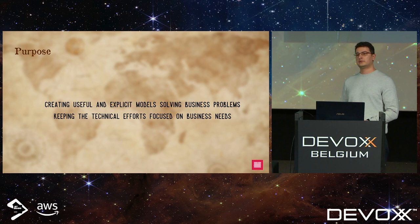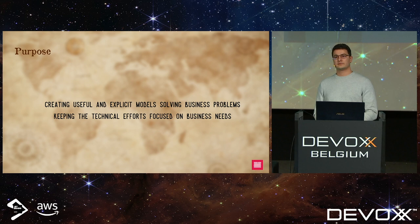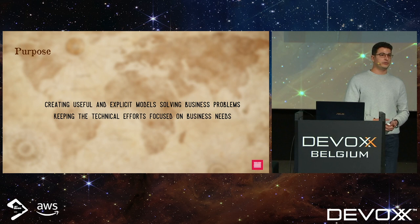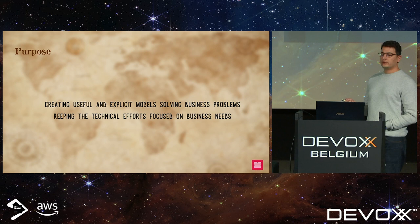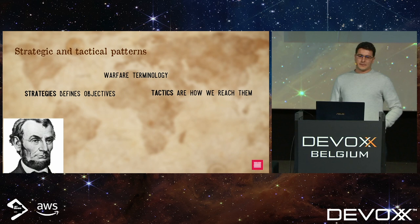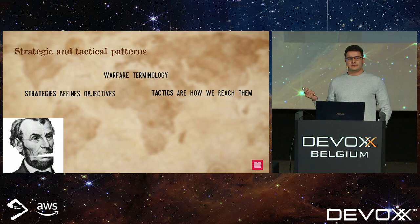The purpose is to create useful and explicit models that solve business problems. A model is an abstraction of domain knowledge. Every software has a model at its core, whether it's explicit or not. This is how software represents the business it works with. DDD keeps technical efforts focused on business needs and aligns the interests of the software development team with the interests of the business.